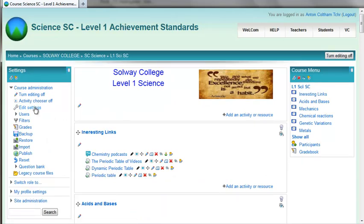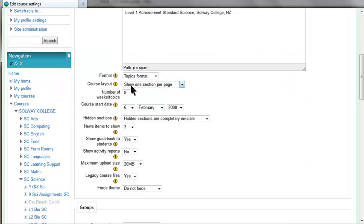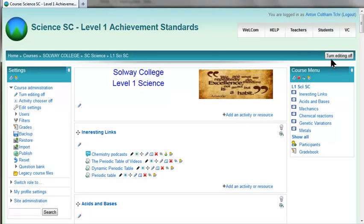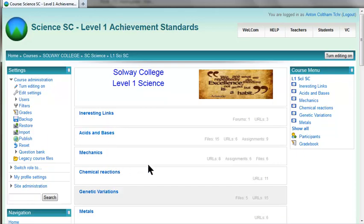So, again, under the course layout, I've chosen show one section per page. And when I turn my editing off, we'll see what the students see. There you go. Just a quick summary.